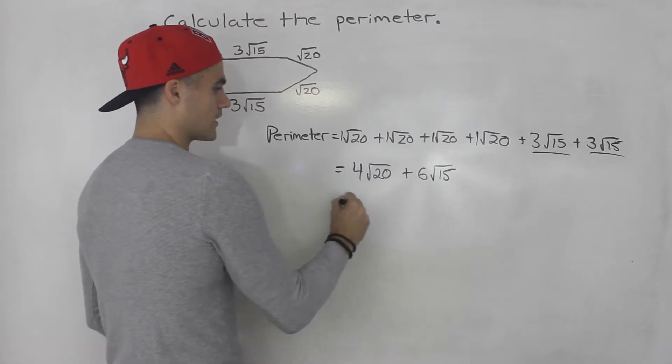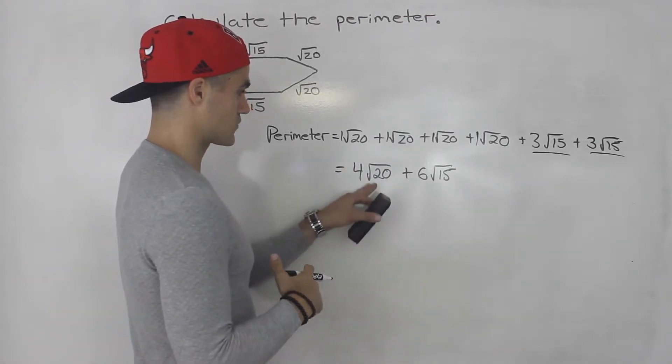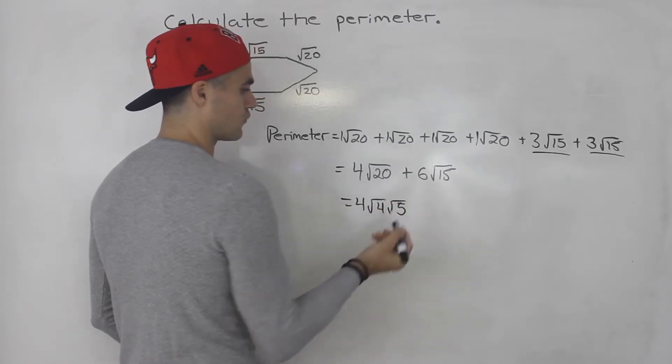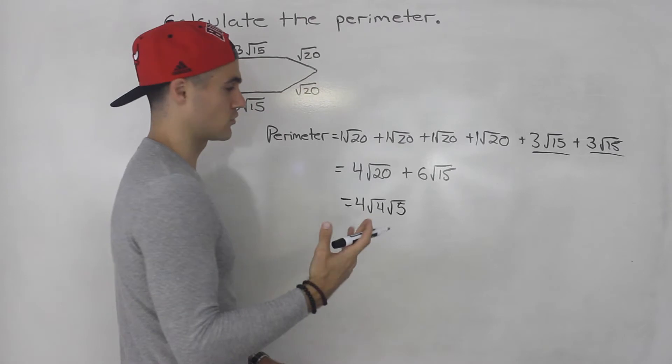Okay, root 20, we can simplify that further, right? Because we could break down that root 20 into root four and root five, right? Root four is a smooth, rootable number.